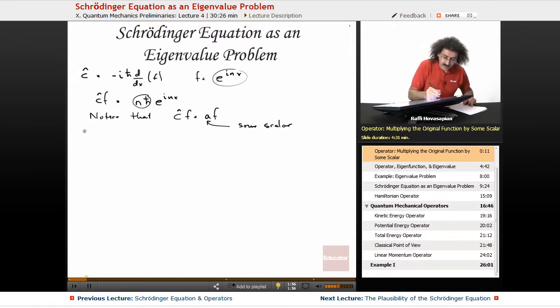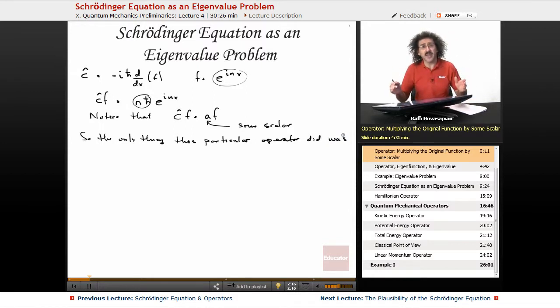So the only thing this particular operator did was multiply f by some constant. In other words, if my function were x squared, I may have ended up with 17x squared. That's it. I just multiplied the x squared by a factor of 17.